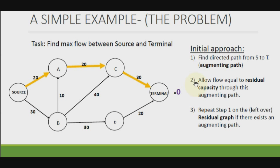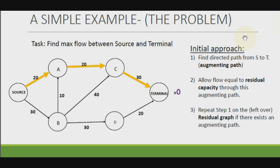Once we have calculated the residual capacity, we work out the residual graph, which is the remaining graph with remaining capacities. If we push a flow of 20 through this path, the remaining capacity on two edges is 0. On another edge, if we push a flow of 20, the remaining capacity will be 10. In the next slide, I'll show you how our residual graph looks.